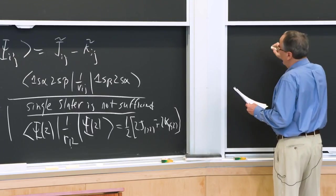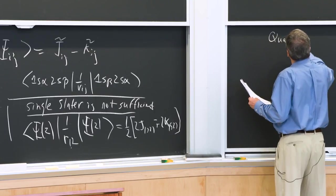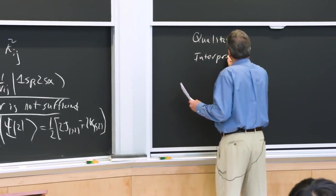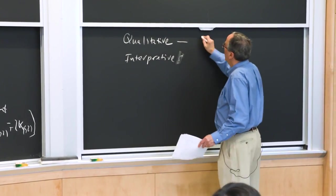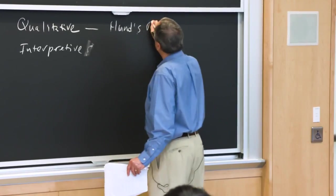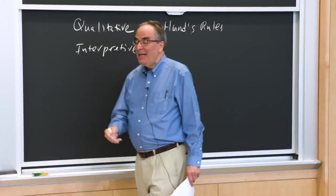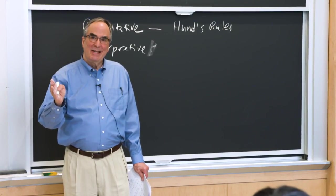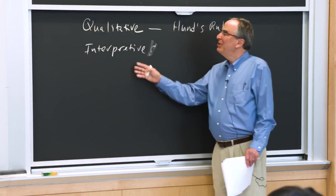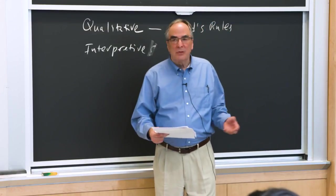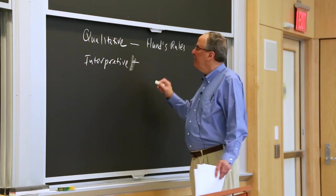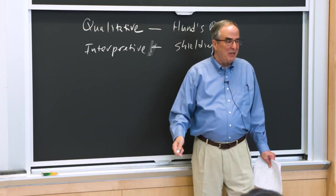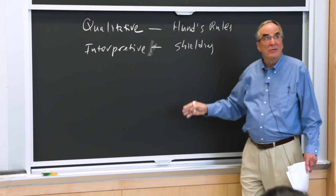OK, so now what are we going to do with it? Well, we'd like qualitative stuff and interpretive stuff. OK, qualitative is Hund's rules. Now, if you looked at 100 textbooks, I think 95 of them will have Hund's rules wrong. You're never going to make that mistake. And interpretive, well, we want to know the trends of things. And we want to be able to do something like what you did in freshman chemistry, shielding. Now, you probably memorized some rules about what shields what. But I'm going to give you a little bit more insight into that. So we're going to talk about this for the rest of the lecture.